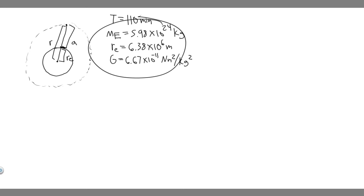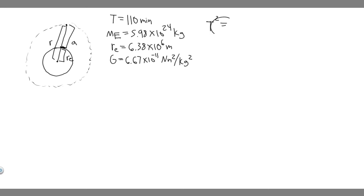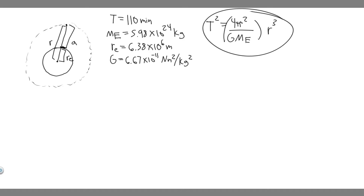The equation we're going to use is Newton's law of universal gravitation, which is T² = (4π²) / (G × Me) × r³, where G is just the gravitational constant, multiplied by the mass of the Earth, and then you multiply this whole thing by r cubed. This equation relates the period, which we're given, with radius, G, and mass of the Earth.